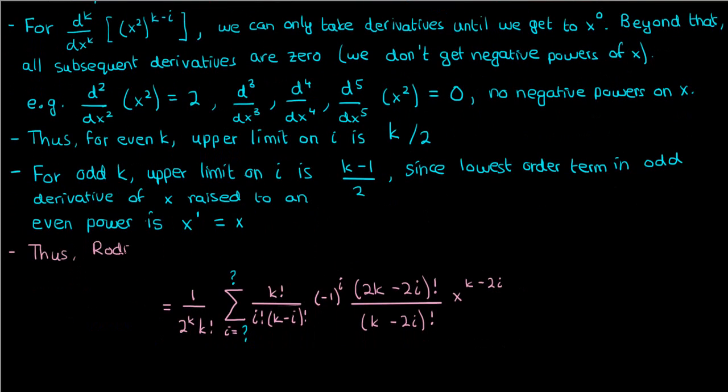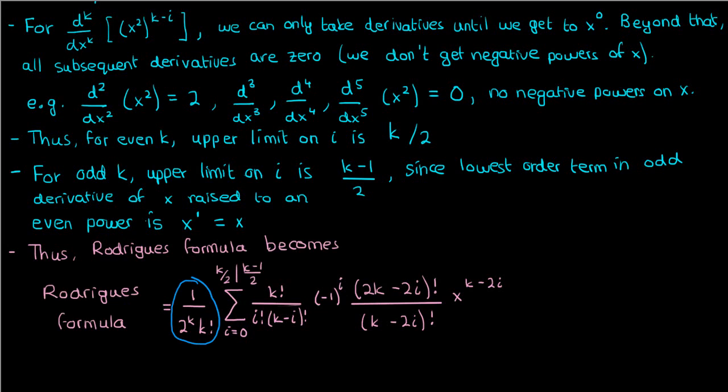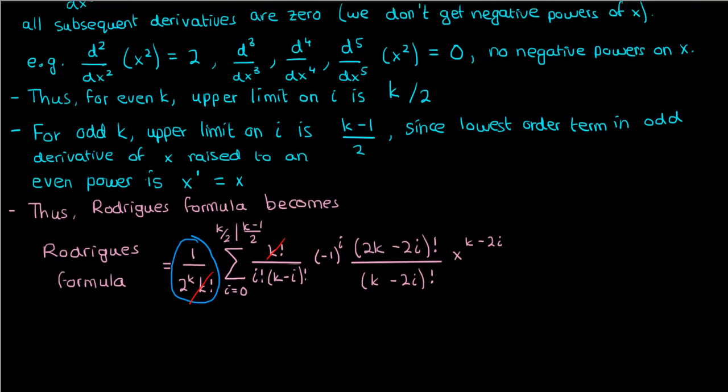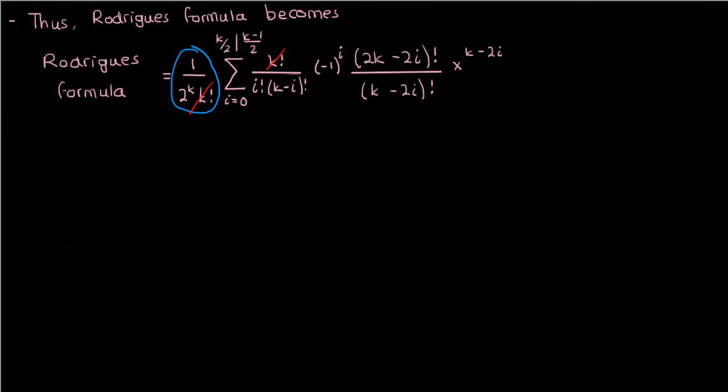So using these upper limits we found, this is what our Rodriguez formula becomes. The last thing we now have to do is multiply in our 2 to the power k and k factorial. If we do that then the k factorials will cancel out and we'll have an extra 2 to the power k in the denominator of the summation, so something like this.